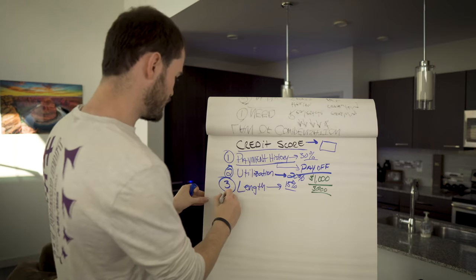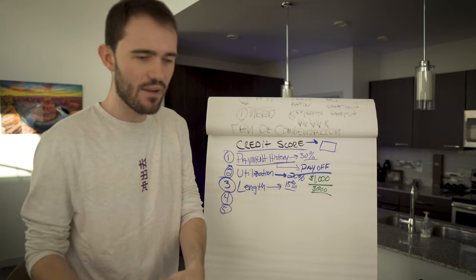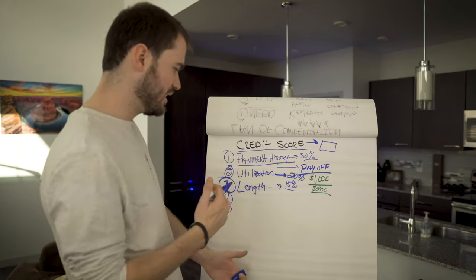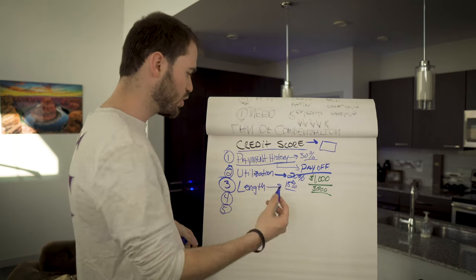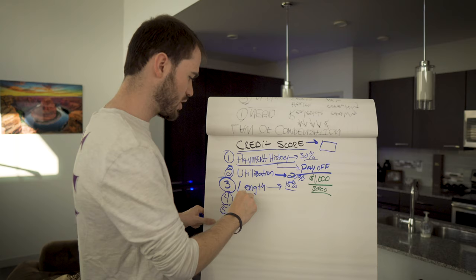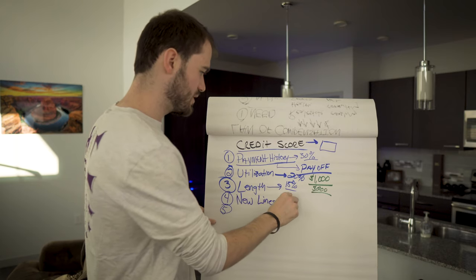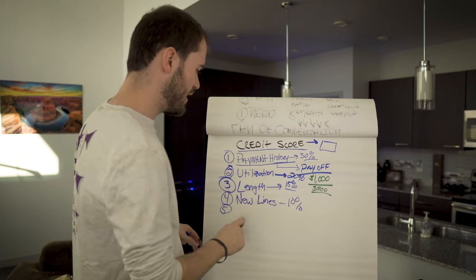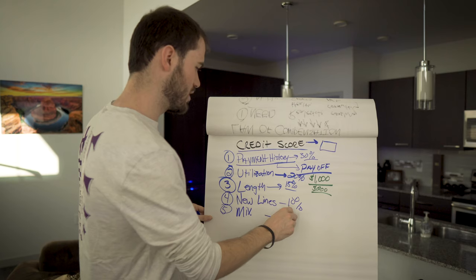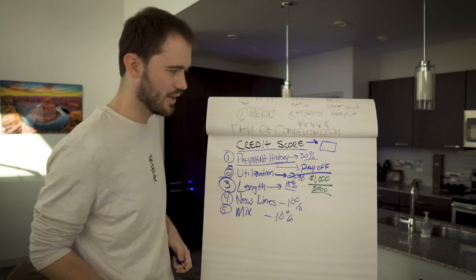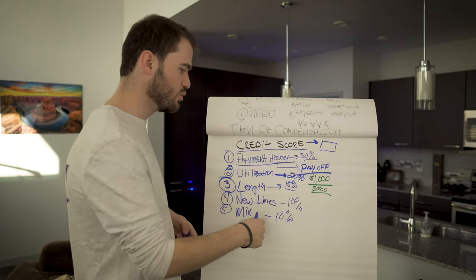There is five elements here, so I'm just going to notch these down. Number four and number five are a little bit different. So number four, you could call it inquiries, they call it, or new credit lines. Okay, so we'll call this new lines. Okay, we'll say 10%. And number five, as I like to call it, is the mix. We'll call it 10%. All these values would be a little bit different dependent on the situation as far as weight goes.